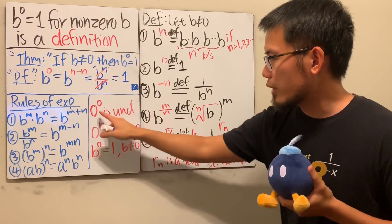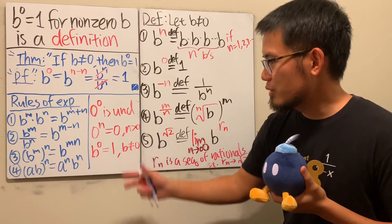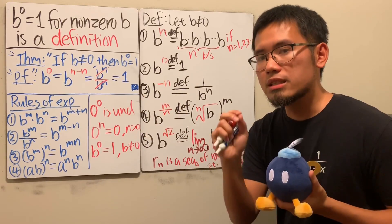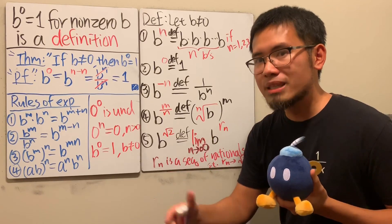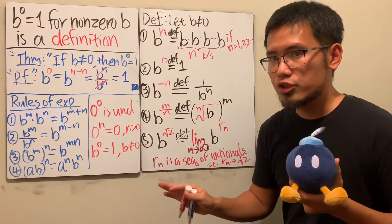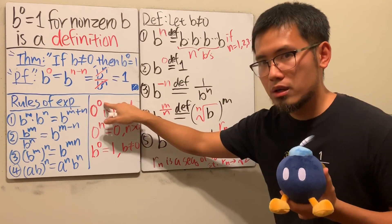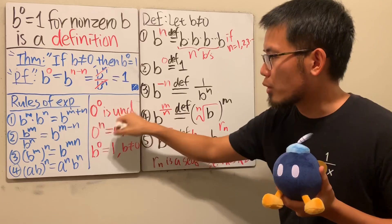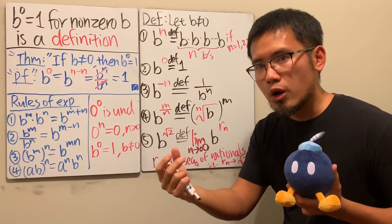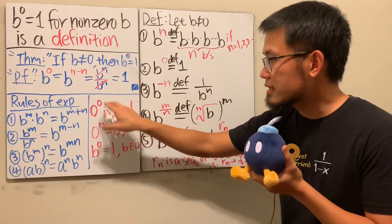Please do not call zero to the zero 'indeterminate' — indeterminate is only for when you are taking a limit in calculus. Here we're talking about exact arithmetic: exact zero to the exact zero power. When you're doing limits, you're talking about numbers like 0.00001 approaching zero, which is not the same as exact zero. Make sure you don't mix those up.